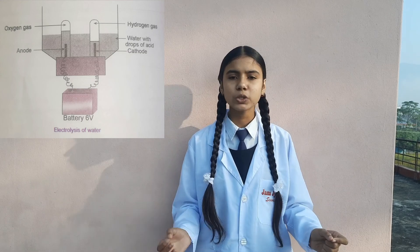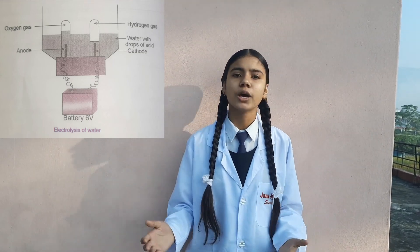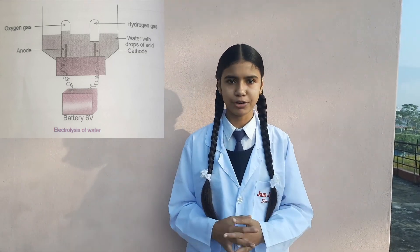Materials required for the electrolysis of water: a voltameter, two test tubes, two graphite rods, a battery of six volts, water, and sulfuric acid. Procedure: take some water in the voltameter and add some drops of sulfuric acid to it, set up all the apparatus, and supply current from the source of electricity. When current is supplied, the water molecule dissociates into opposite ions and moves towards the respective electrodes.